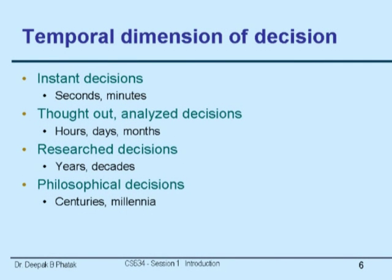Answering objective-type questions is also relevant in professional life — you are required to take quick decisions that are practiced, because you would have handled similar situations many times or have all the background information stored in your mind. Thought-out analyzed decisions take hours, days, or months — for example, an assignment due in one week, or a mini project with two to three months to work on. Research decisions are an extended form of thought-out decisions, covering final year M.Tech or PhD projects.